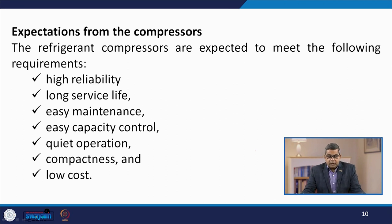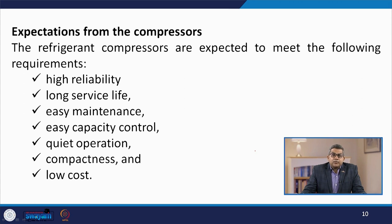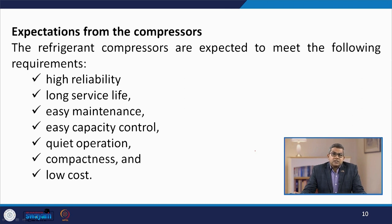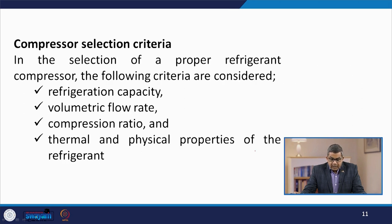Various expectations exist for compression units in refrigeration cycles. They should be highly reliable, possess long service life, and be easy to maintain — since frequent changes or difficult maintenance increases cost. They should have easy capacity control, quiet operation to avoid noise pollution, compactness, and low cost. All these are desirable for smooth functioning of any vapor compression refrigeration system.